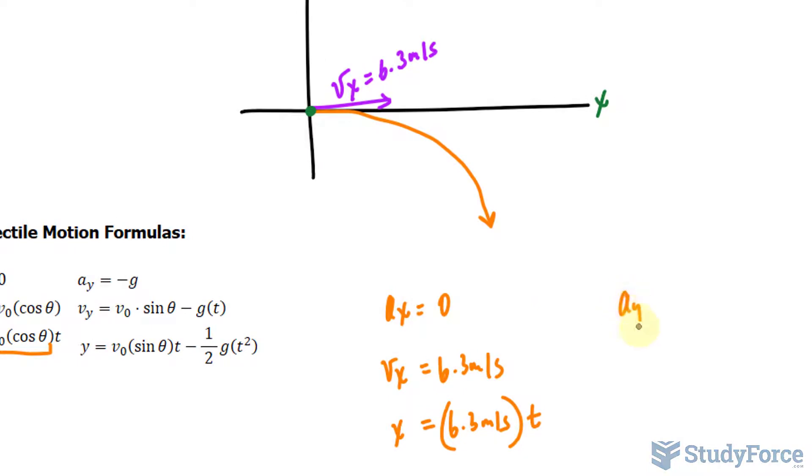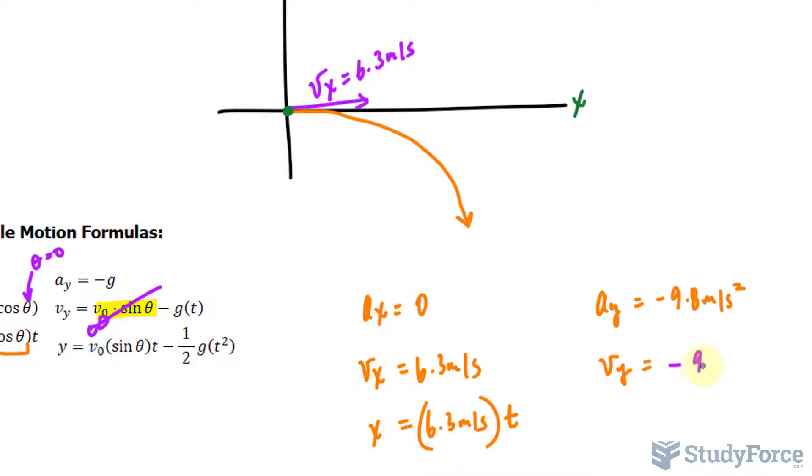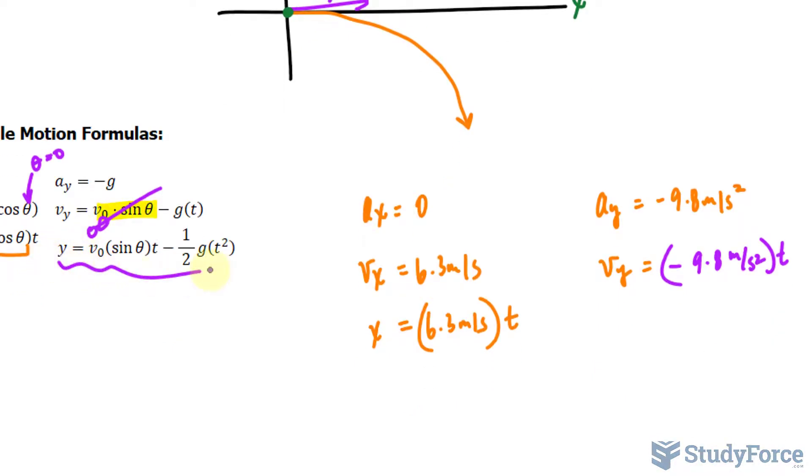In this column, we have ay equals negative 9.8 meters per second squared. vy equals, this first term becomes zero. Because for the equation to hold true where vx is 6.3, the angle has to be zero. Therefore, if we place zero in for sine, that makes this term go to zero. So vy equals negative 9.8 meters per second squared times t. For this last equation, this term goes to zero, and we're left with negative half times 9.8 meters per second squared times t².